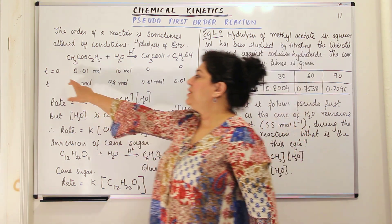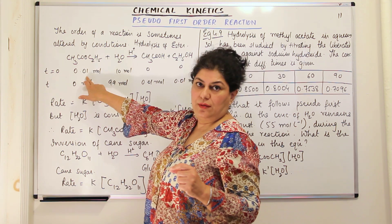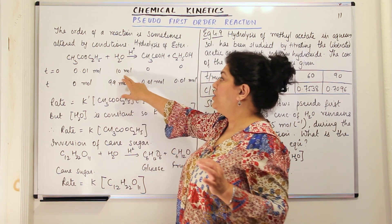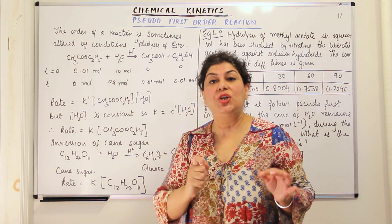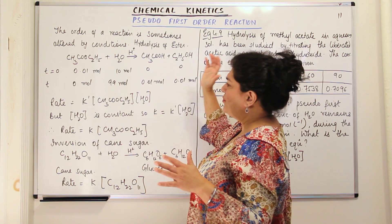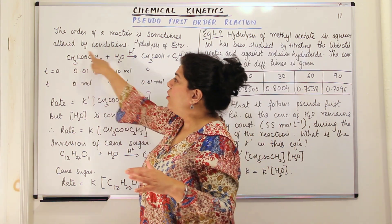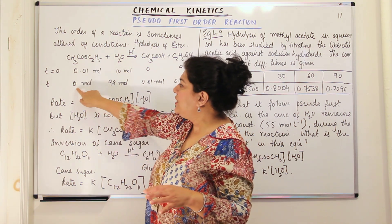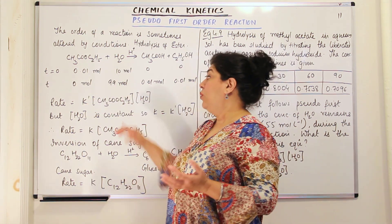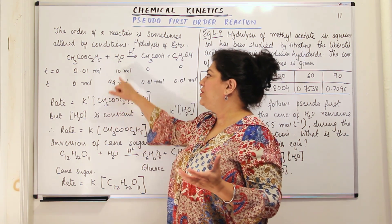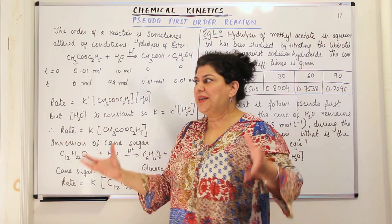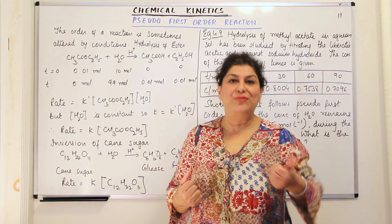At time t = 0, the concentration of ethyl acetate was 0.01 mole and water was 10 moles — there is a large difference in quantity. When the reaction proceeded and all of the ethyl acetate was used up, you were left with zero moles of ester at time t, and the concentration of water was 9.9 moles. So out of 10 moles, only 0.1 mole was used and 9.9 moles remained. The presence of water is not going to limit or slow down the reaction.